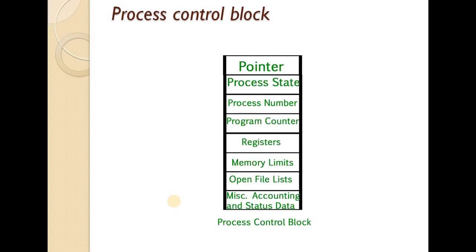In the following diagram, you can see the process control block and what type of information is stored in it. We can store a pointer, the process state, the process number, program counter, registers, memory limits, open file list, and miscellaneous data like accounting and status data. We shall see each of these in detail.